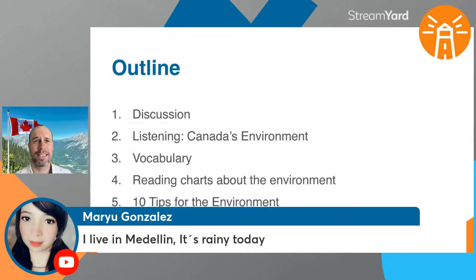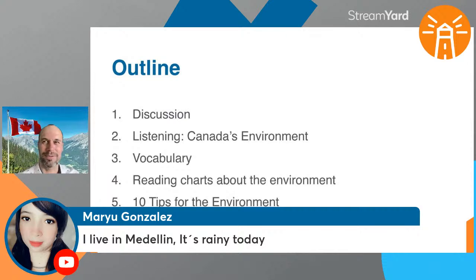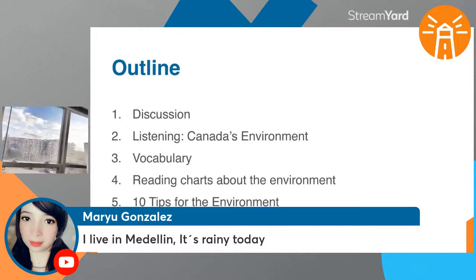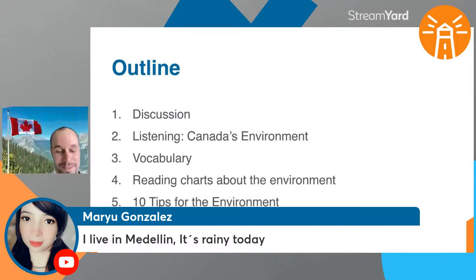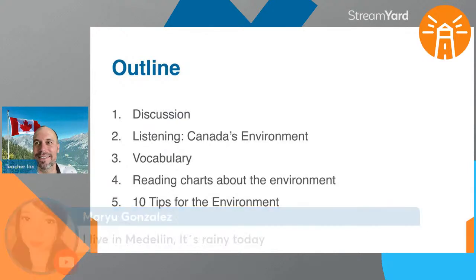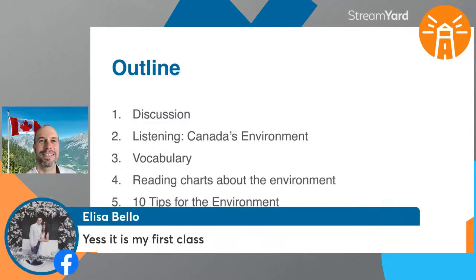Before we move on, let's just see what people are saying. Mario says he lives in Medellin and it's rainy today — kind of like Halifax, it's going to be rainy for the next five or six days. Let me just show you the real world out there — a nice blue sky. It's one of the nicest days for a while. Alyssa says yes, it's her first class — great, thank you for joining us. Everybody, welcome Alyssa and say hello to her.